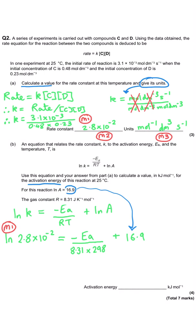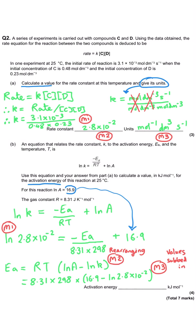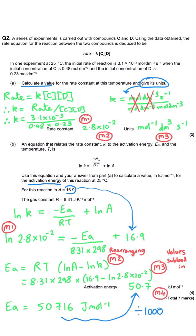Rearranging, activation energy equals RT times (LN(K) − LN(A)), and we ultimately get an activation energy of 50,716 joules per mole. Since they've asked for kilojoules per mole we divide by a thousand, giving 50.7 kJ/mol. In a question like this they're likely to accept 51 kJ/mol because they haven't asked for a particular degree of precision.